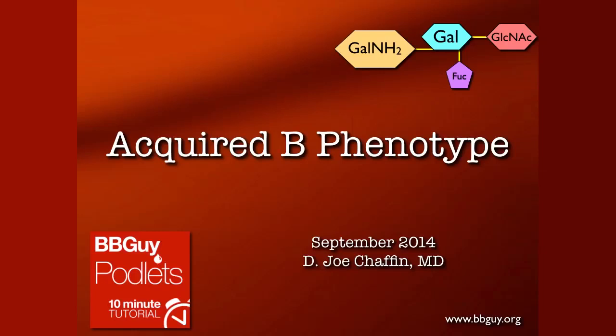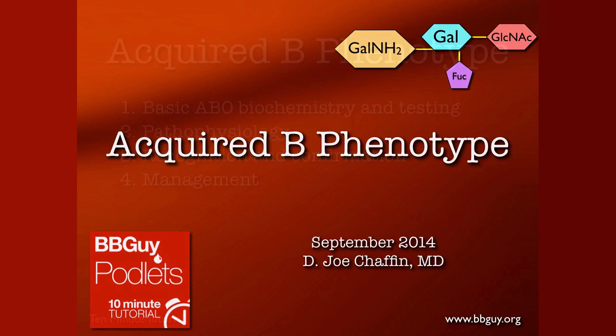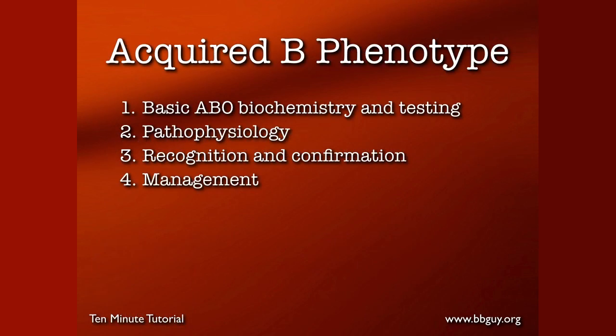Hi, this is Dr. Joe Chaffin and this is another Blood Bank Guy Podlet. Today we're going to do a 10-minute tutorial on the famous acquired B phenotype. I call it famous because it is a very popular topic on standardized exams. The reality is we don't actually see it all that often in actual practice, but since we need to be familiar with it, let's take a quick tour.